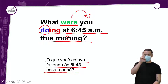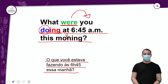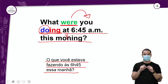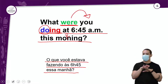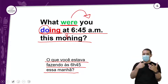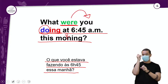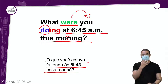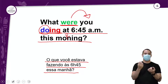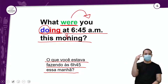Se eu fosse responder, eu diria: 'I was sleeping' — eu estava dormindo. Não preciso colocar muita coisa. Posso falar 'na minha casa, com a minha pet', posso adicionar informações, mas 'I was sleeping' já é a sua resposta — eu estava dormindo.